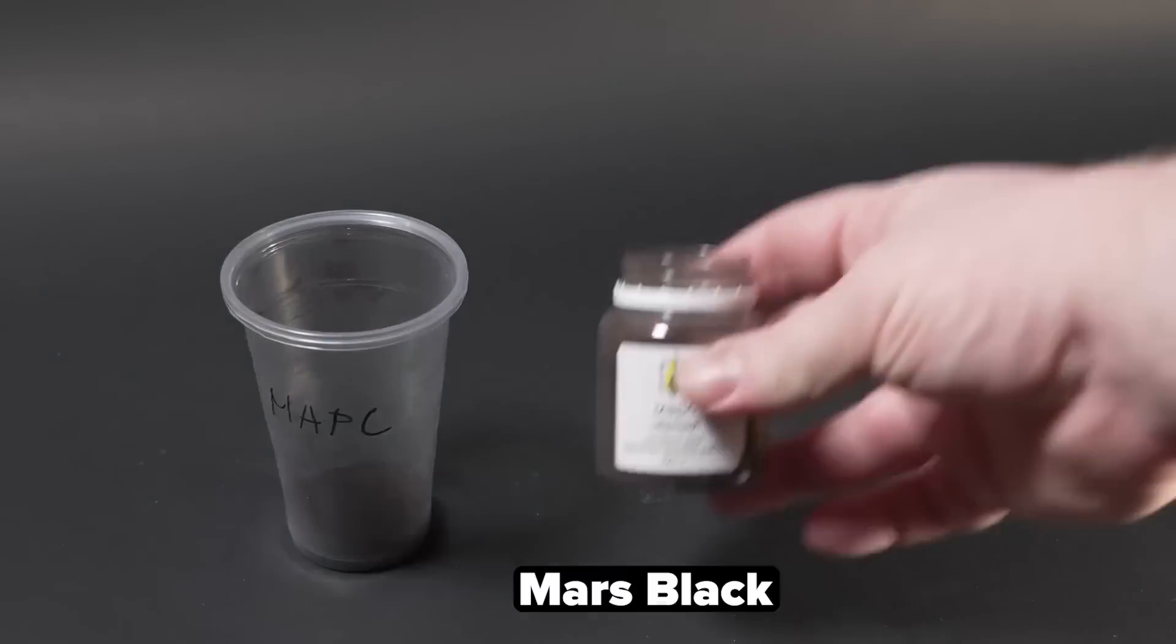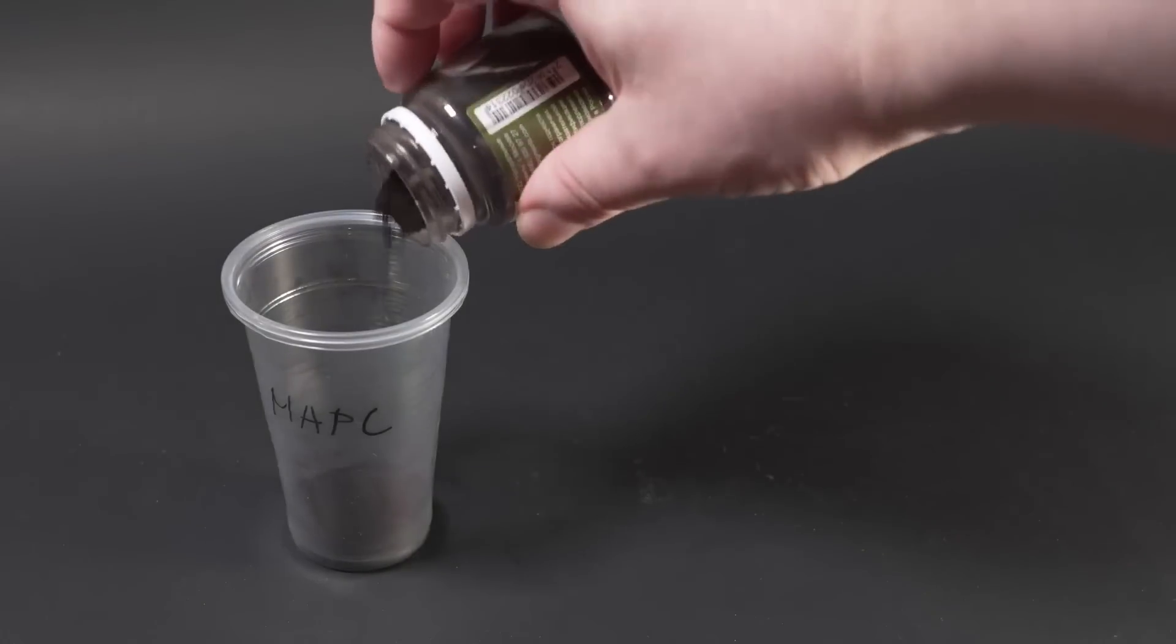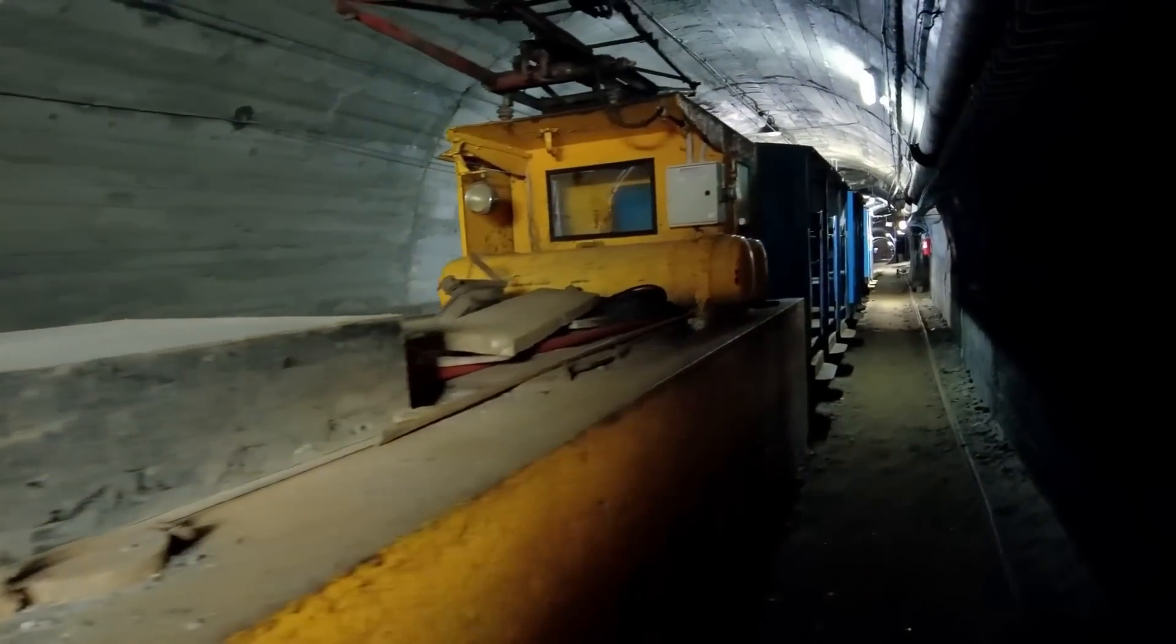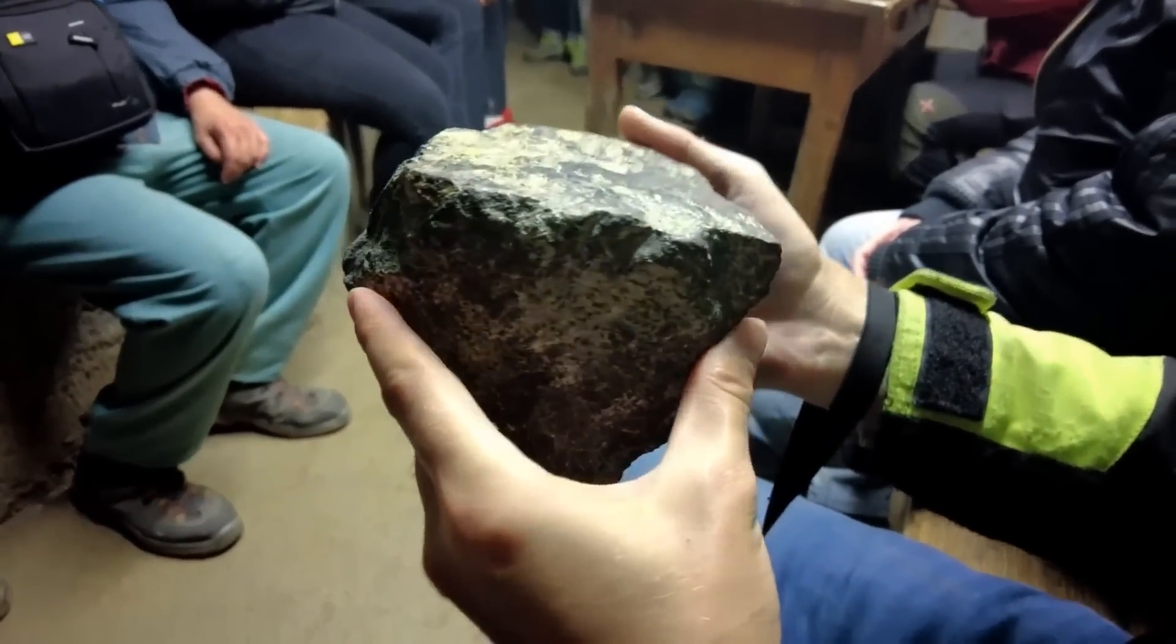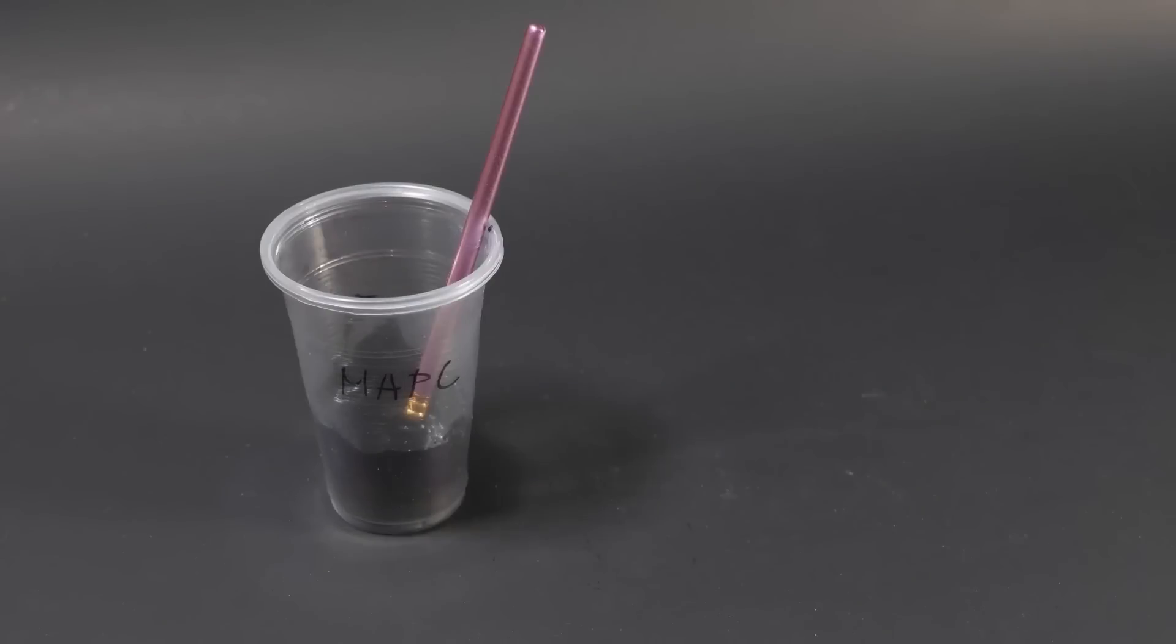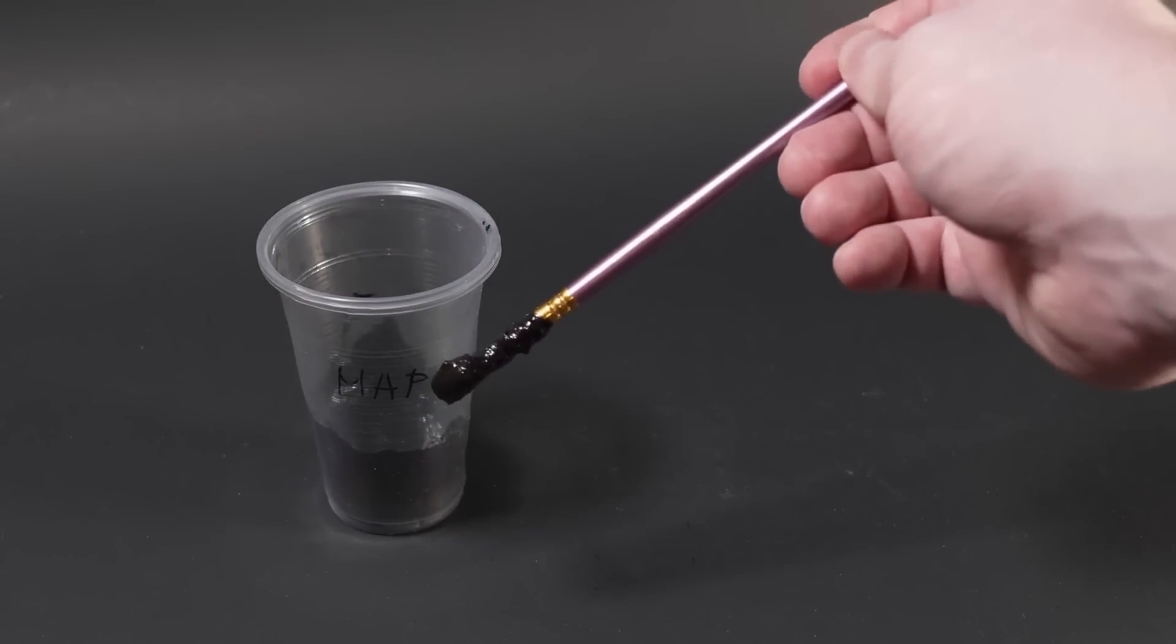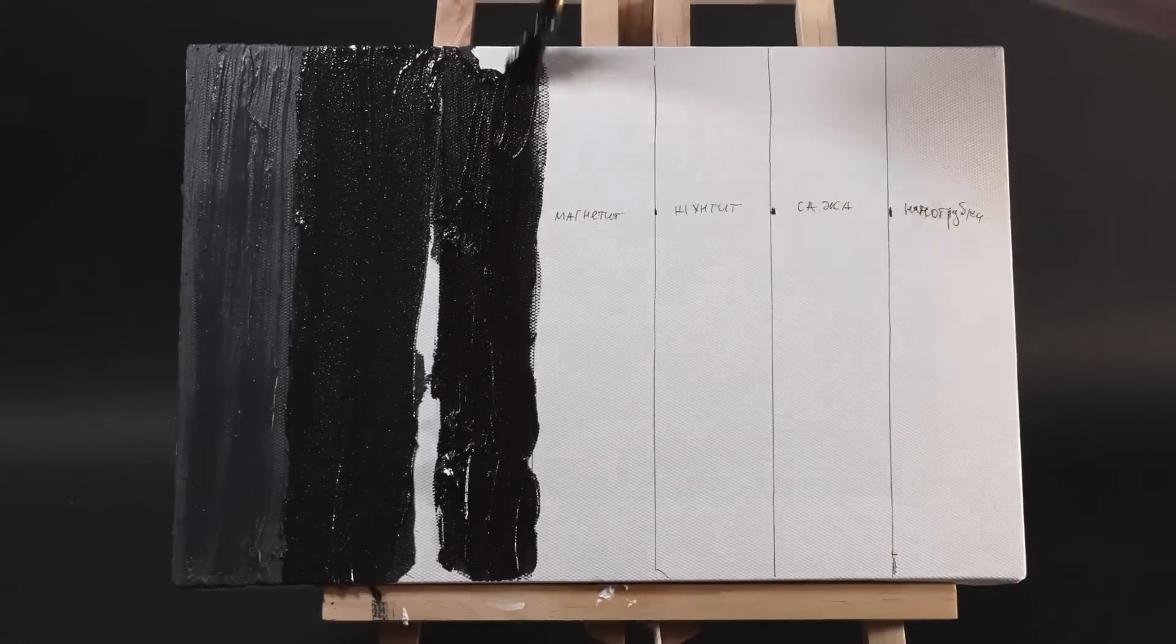Since ancient times, magnetite, which is a mixed iron oxide, has also been used as a pigment. It's also called Mars black. It can be mined using a shaft method, as this mineral is also the main source of iron. Magnetite fully lives up to its name, as due to the special arrangement of electrons between the two mixed iron oxides, it has quite strong magnetic properties. To find out how black this paint will turn out, I first mixed the commercially available pigment, Mars black, and then applied it to the canvas. Overall, the paint turned out to be quite dark.